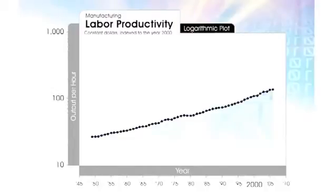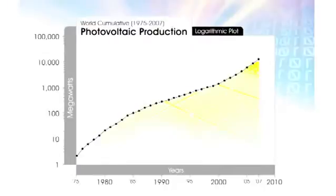All of this has fueled a very smooth and predictable increase in productivity. We've gone from $30 to $130 in constant dollars in the value of an average hour of human labor, fueled by information technology. We're all concerned about energy and the environment. This is a logarithmic graph representing a smooth doubling every two years of the amount of solar energy we're creating, particularly as we're now applying nanotechnology — a form of information technology — to solar panels.